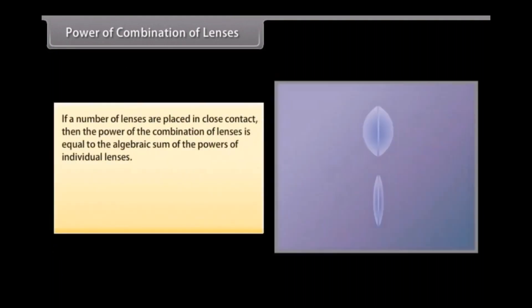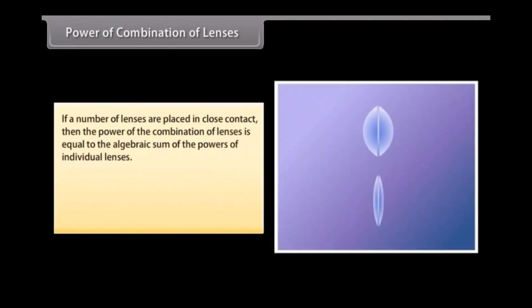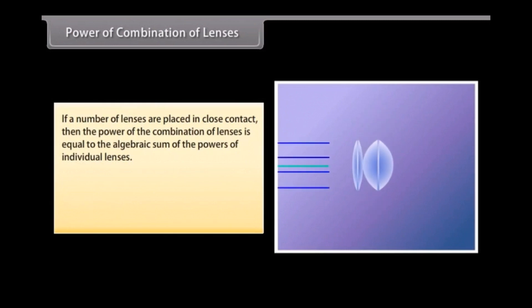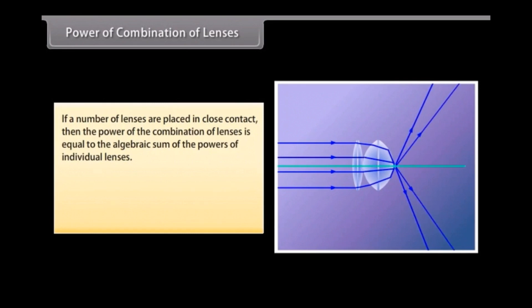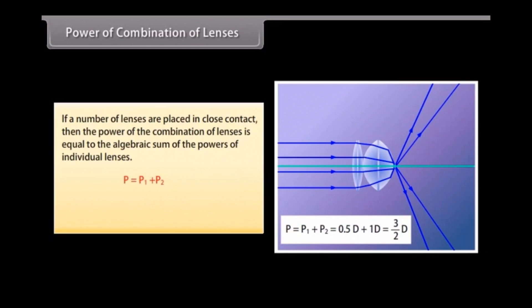Power of a combination of lenses: If a number of lenses are placed in close contact, the power of the combination equals the algebraic sum of the powers of the individual lenses: P equals P1 plus P2. The SI unit of power of a lens is the diopter, denoted by the letter D.